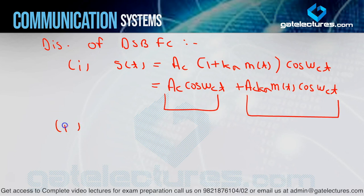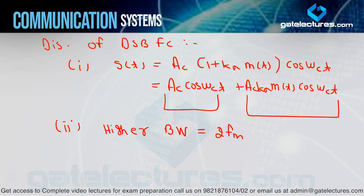The second disadvantage is higher bandwidth. The bandwidth in case of DSB-FC is 2FM, which is very high. You will see in upcoming modulation techniques how bandwidth will become lower. The next major disadvantage seen in the demodulation side during synchronous detection is the quadrature null effect. We studied this in the last video — because of the quadrature null effect, the output at the receiver was 0. These are all the basic disadvantages we need to overcome in upcoming modulation techniques — some in DSB-SC and some in SSB-SC.